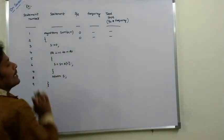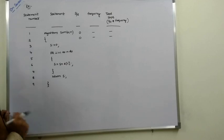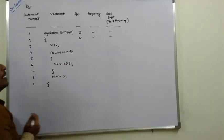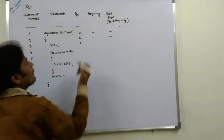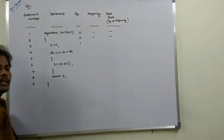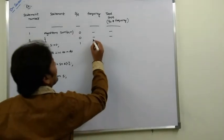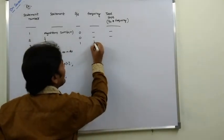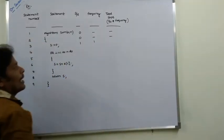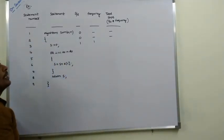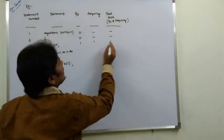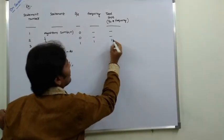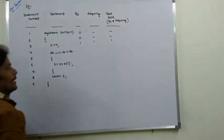The statement S = 0 is a valid statement, so S/E = 1. It is executed only once, so frequency = 1, and total number of steps = 1 × 1 = 1.